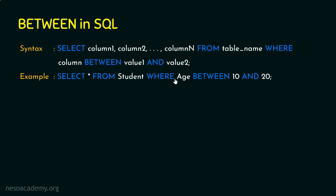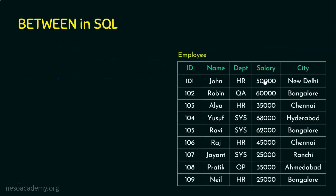For example: SELECT all columns FROM student WHERE age BETWEEN 10 AND 20. This retrieves records where the age is greater than or equal to 10 and less than or equal to 20 — in simple terms, between 10 and 20. Remember, 10 and 20 are also included.